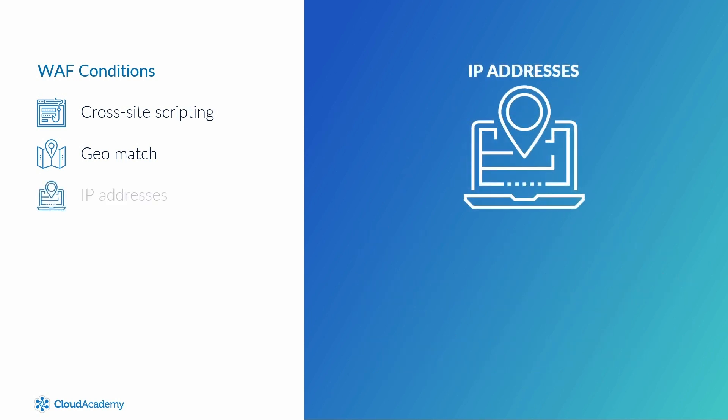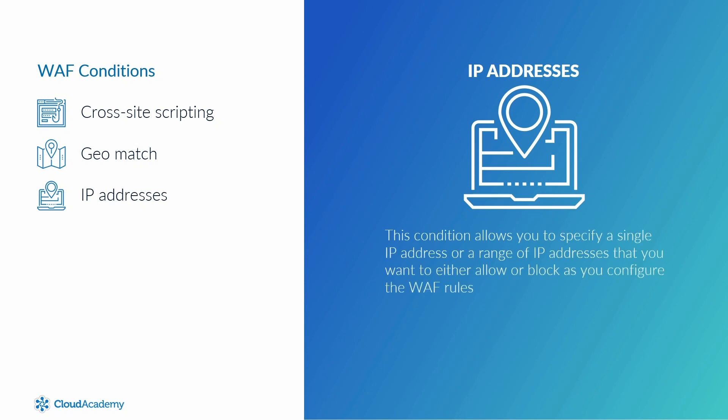IP addresses: much like the geo-match setting, this condition allows you to specify a single IP address or a range of IP addresses that you want to either allow or block as you configure the WAF rules. This can be used in conjunction with the geo-match condition for granular access. For example, you might decide to block all originating requests from a specific country using geo-match, but then allow specific IP addresses access to your web infrastructure from that country using the IP address condition.